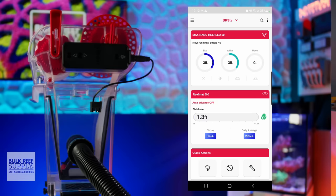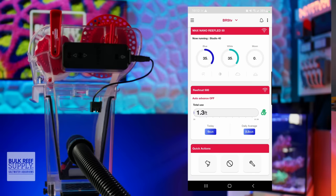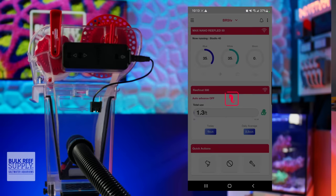You can actually keep track of how much fleece is being used through the Reef Beat app. Right on the dashboard, you'll be able to see how much of the roll has been used total, how much has been used today, and what the daily average is. The app will also notify you when your roll's about to end, so you can make sure you replace it in time.